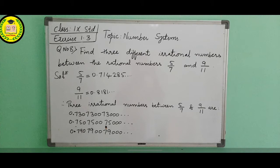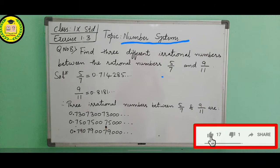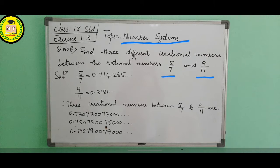Hello everyone, now number system exercise 1.3 question number 8. Find three different irrational numbers between rational numbers 5 by 7 and 9 by 11. So 5 by 7 and 9 by 11, first we need to write in the decimal expansion form.